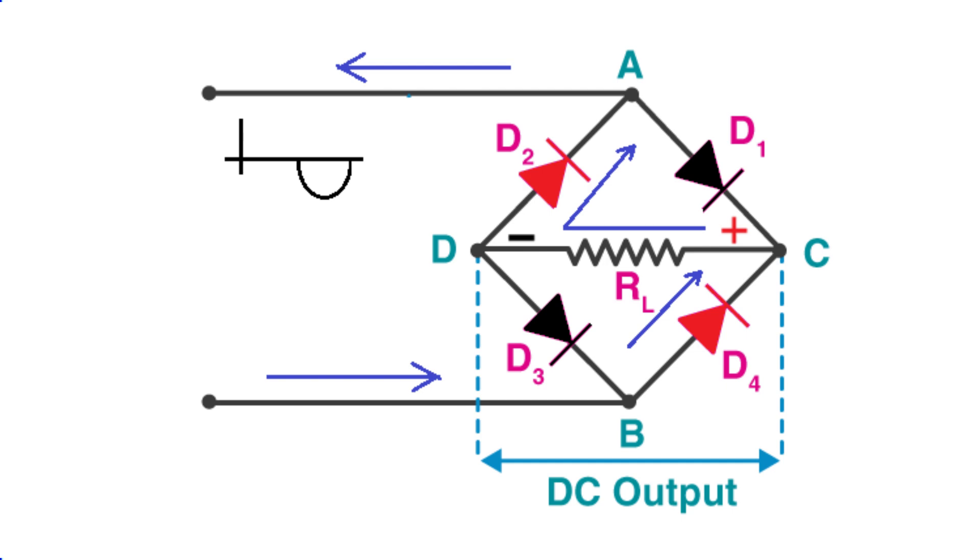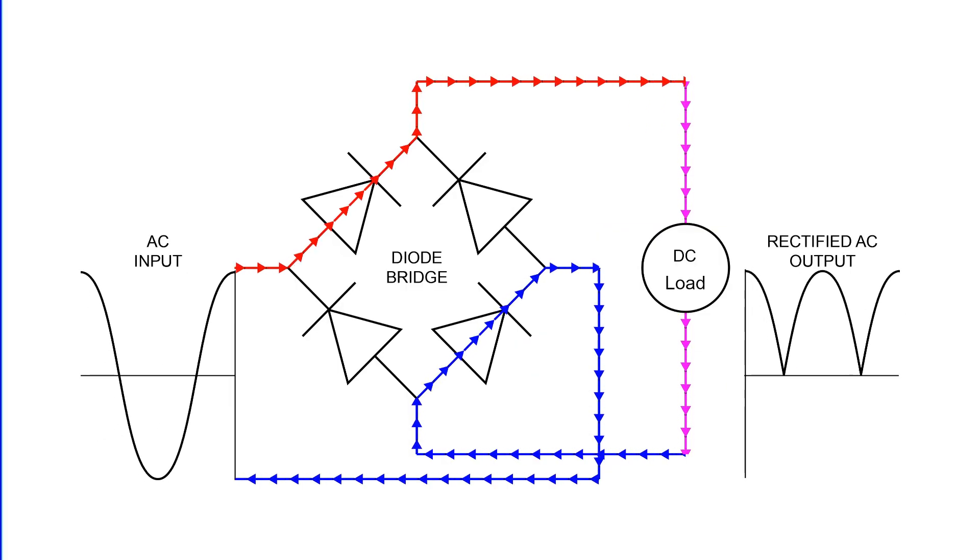This signifies that no matter the nature of the input pulse, whether it's positive or negative, the output at load terminal of the bridge rectifier consistently sustains a constant polarity. This remarkable characteristic is the true marvel of a bridge rectifier.